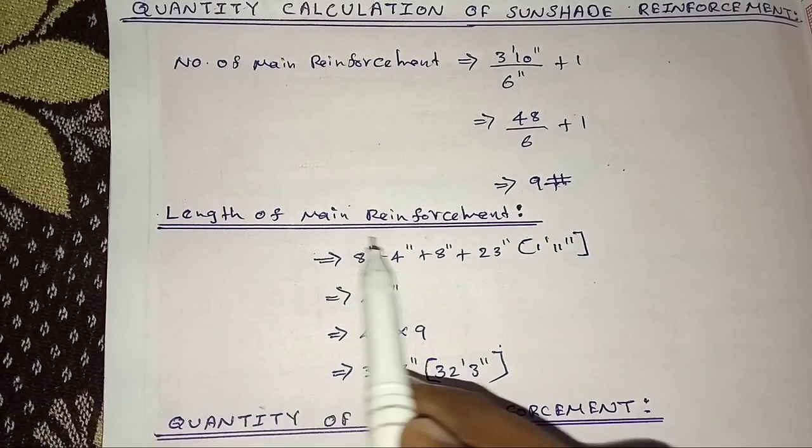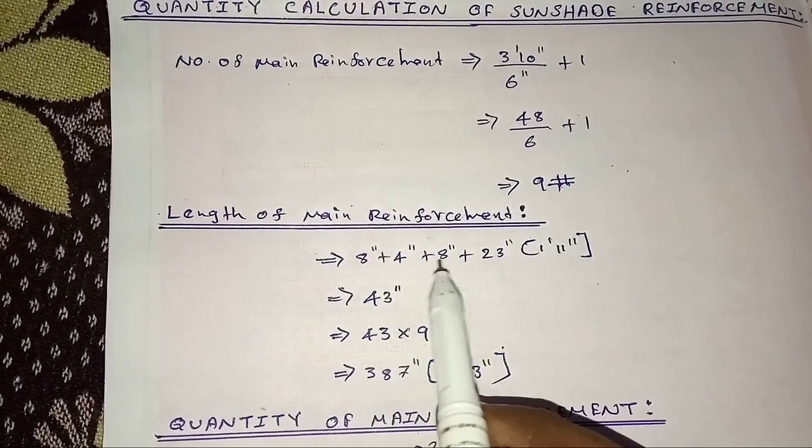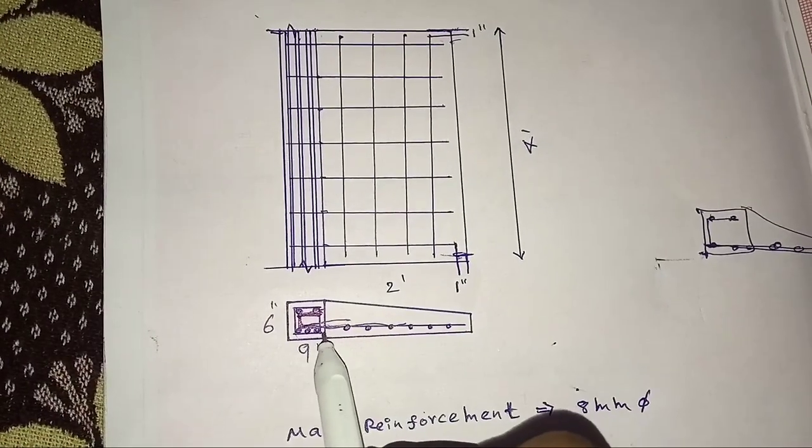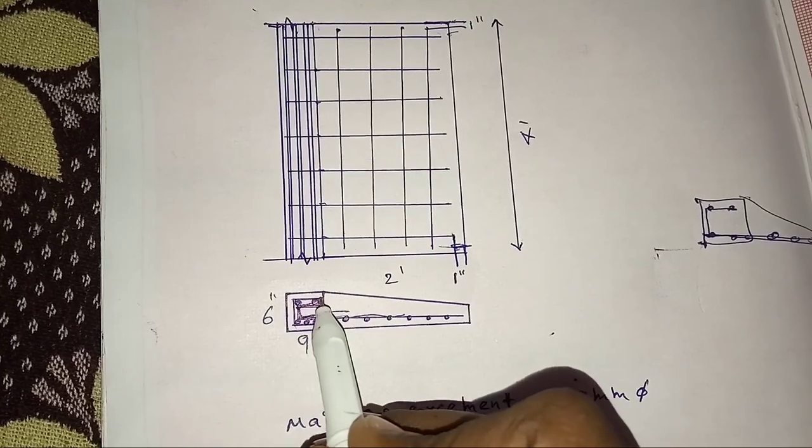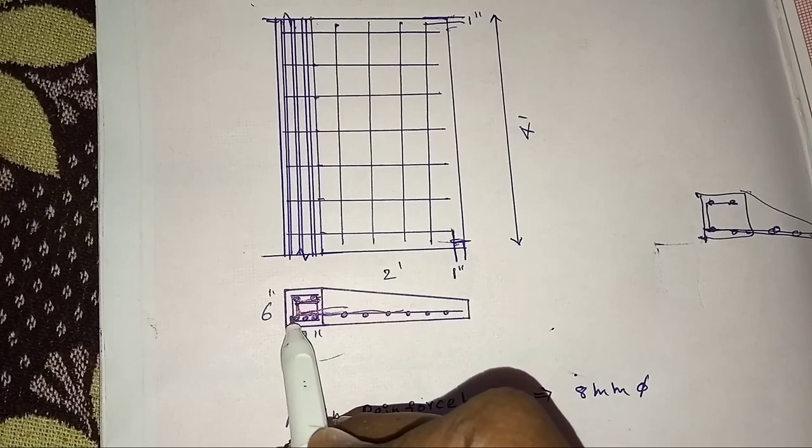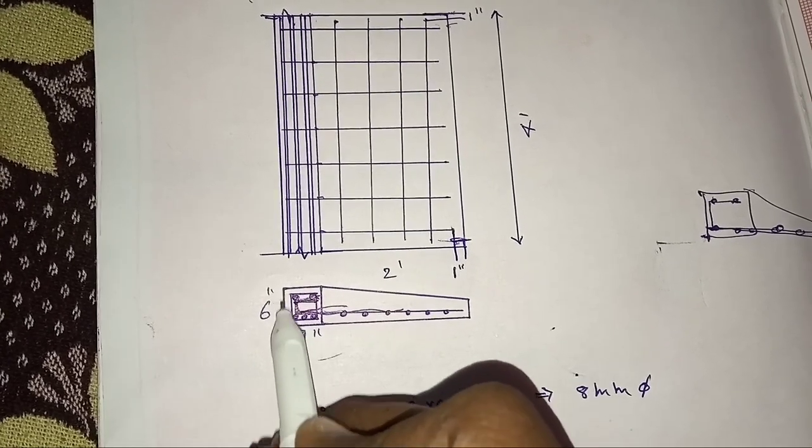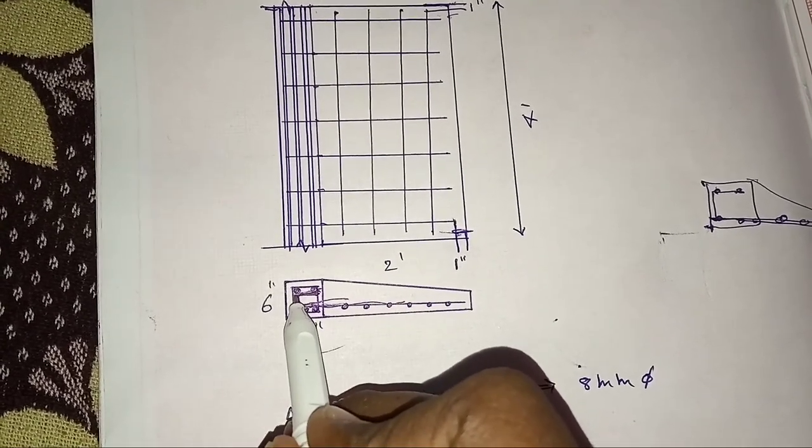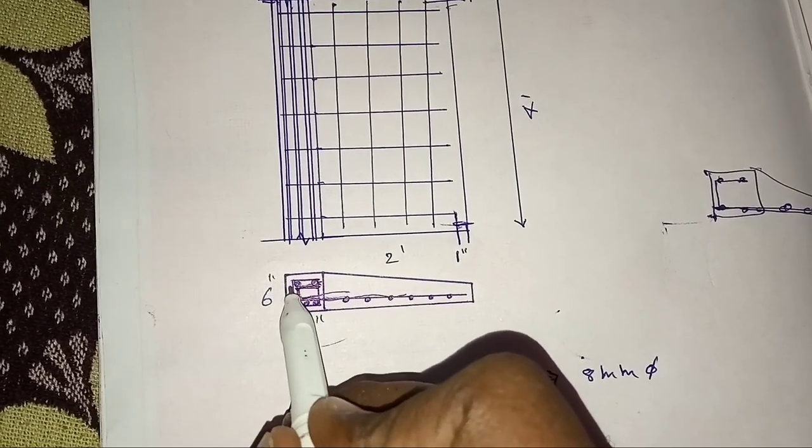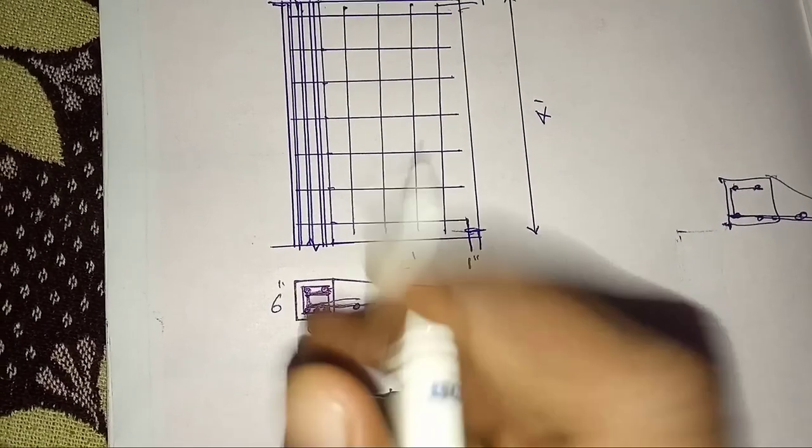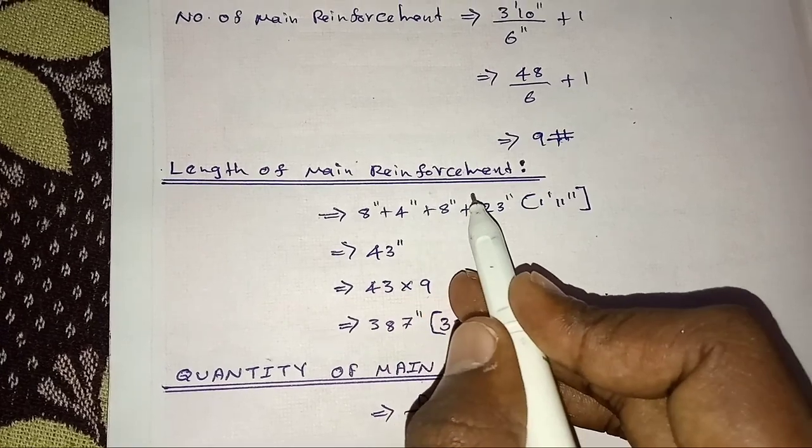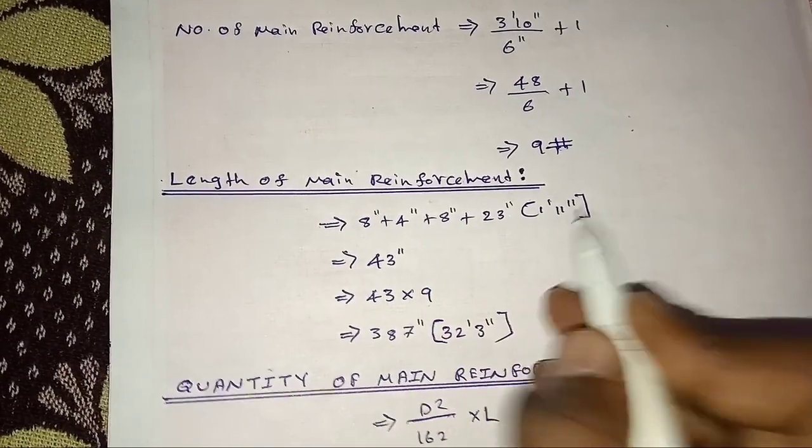Now, the length of main reinforcement. The length of main reinforcement is 8, 4, 8. Here is 9, here is the number of reinforcement. The right reinforcement volume is 8. Then 4 plus 8. Now, this value plus 8. 4 plus 8 plus 23.